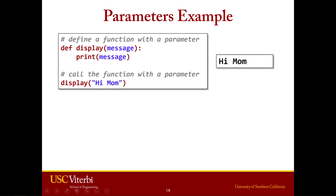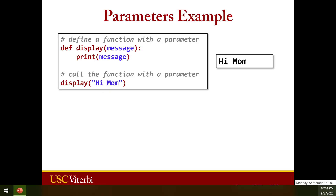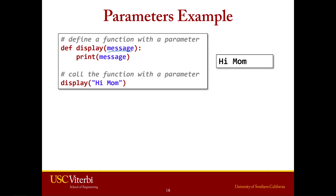Let's look at an example. Here we have a simple function that takes one parameter, message. Message is a placeholder — think of it as a box, a container. Everywhere you see that variable name, you have that same container. So when you say 'hi mom,' you're taking that value, the argument, and passing it into the function definition. Everywhere that box appeared, it gets replaced with whatever string you passed in — 'hi mom' — and your output appears.